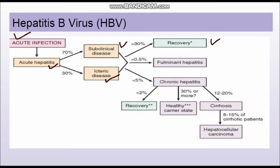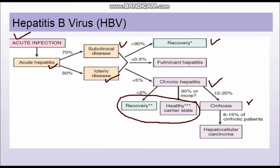However, a few patients can progress into chronic hepatitis. These chronic hepatitis patients can exist in a healthy carrier state with no symptoms, and recovery can also take place. In very few patients, cirrhosis can occur, and in those cirrhosis patients only around 6 to 15 percent can go on to develop hepatocellular carcinoma.